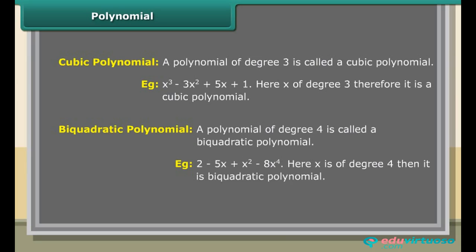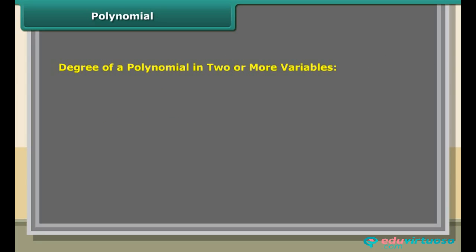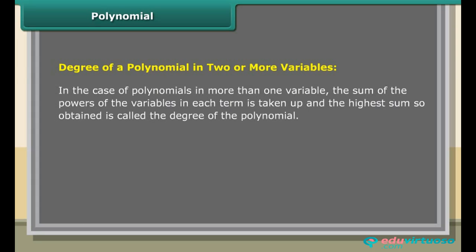A polynomial of degree 4 is called a bi-quadratic polynomial. Example: 2 − 5x + x² − 8x⁴ — here x is of degree 4, so it is a bi-quadratic polynomial. For polynomials in two or more variables, the sum of the powers of the variables in each term is taken, and the highest such sum is called the degree of the polynomial.